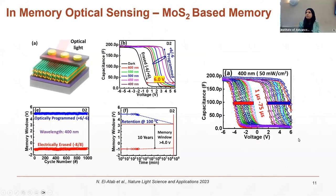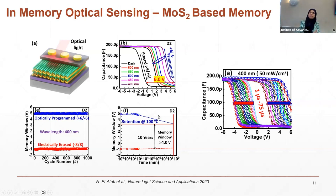Now we move to the optical performance to show the ability to sense optical data. We shone laser light onto the device at different wavelengths. The erase state is under dark conditions. When programming the device with different wavelengths of light, we see different memory windows, meaning we can differentiate between different wavelengths of light within the same memory device. Retention characteristics also show we retain data at elevated temperatures up to 10 years with a large memory window — confirming non-volatile performance. We are sensing the optical data and storing it directly within the same device.